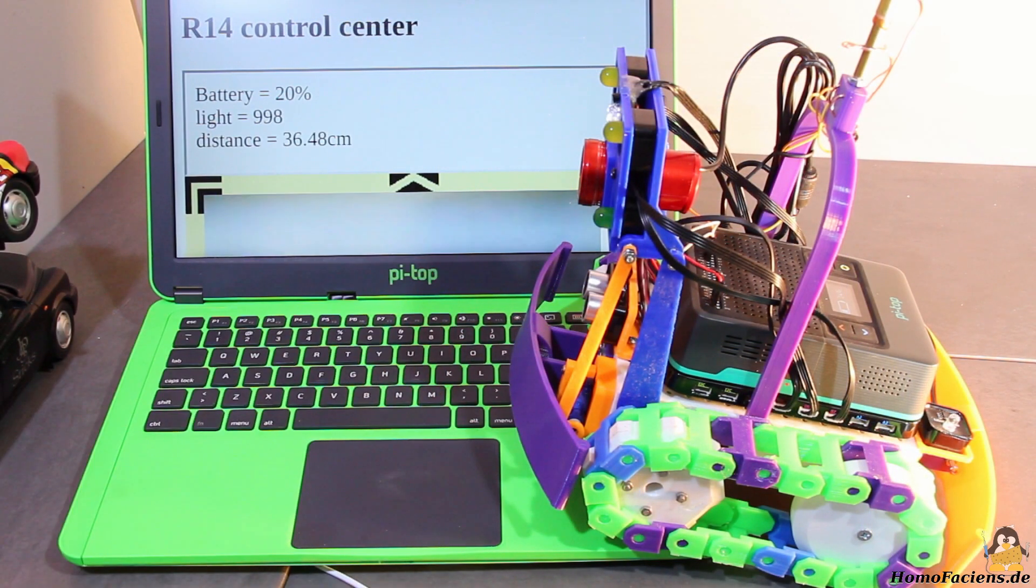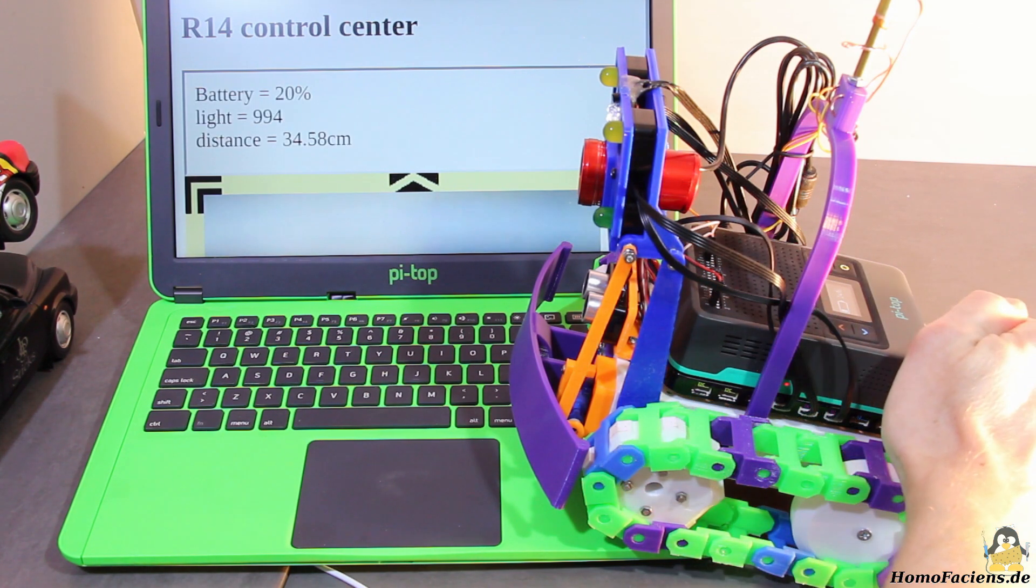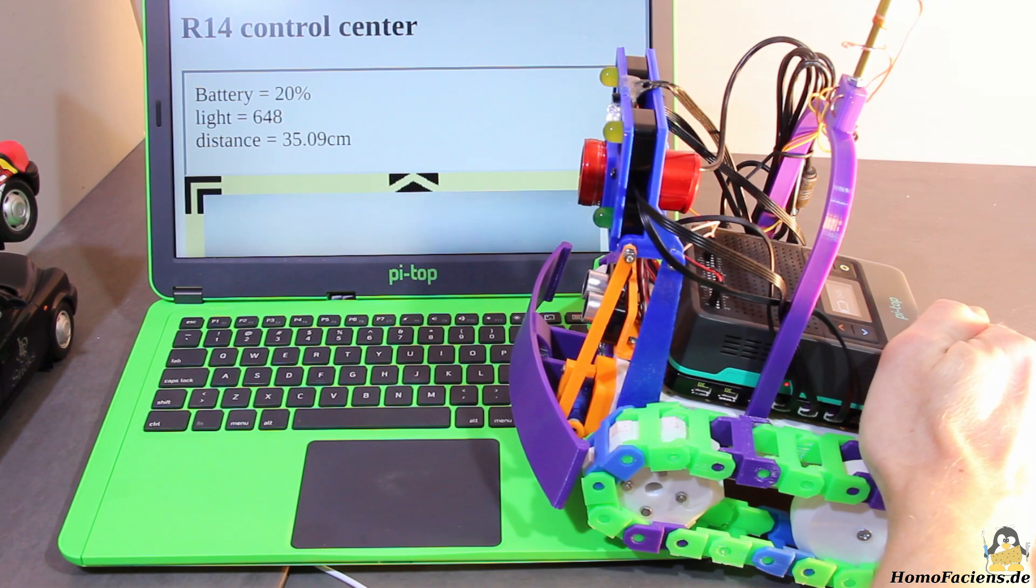The ultrasonic sensor is attached to the front of the rover and measures the distance to the nearest obstacle. The light sensor does what its name suggests, it indicates how bright it is currently in my robot room.